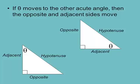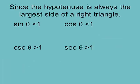Opposite and adjacent depend on which of the two acute angles we're looking at — hypotenuse never changes. The two acute angles are complementary, so they add up to 90 degrees. Which acute angle we're discussing determines which side is opposite and which is adjacent, and therefore changes sine, cosine, and tangent. Because the hypotenuse is always the largest side, sine and cosine are always less than 1. Cosecant and secant are always greater than 1 because the hypotenuse is on top.